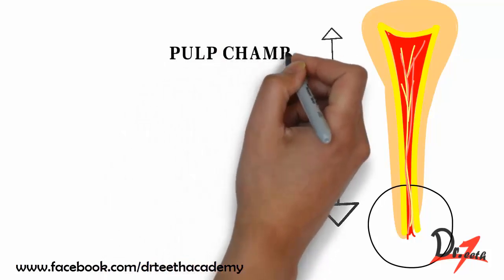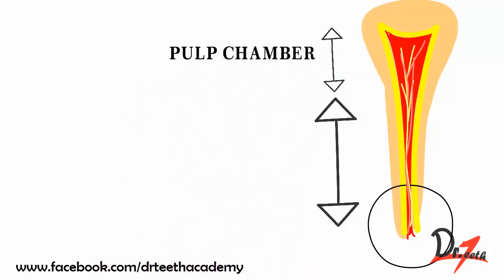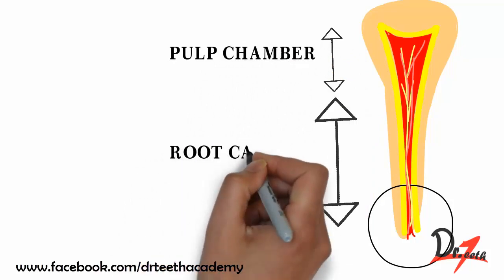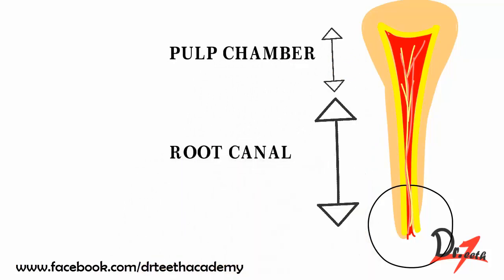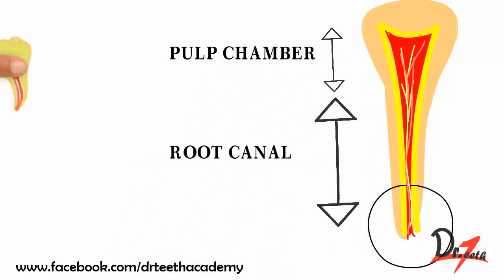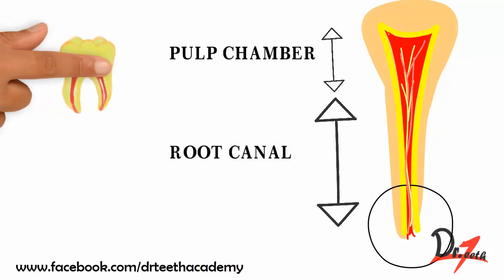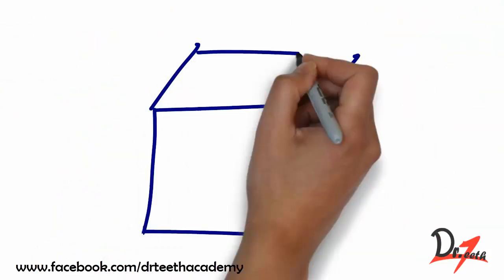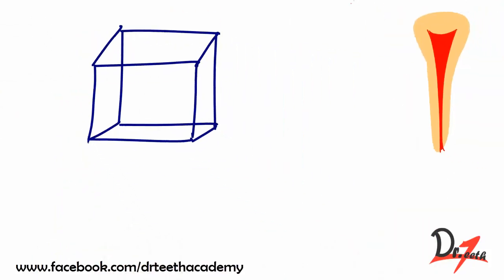The pulp chamber is the coronal portion while the root canal is the radicular portion. There is a line of division between the two — yes for multi-rooted teeth and no for anterior teeth. Imagine the pulp chamber as a cube: it has a roof and a floor, and unlike a house roof, this roof extends from the corners up under the cusps.